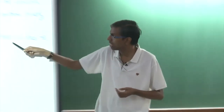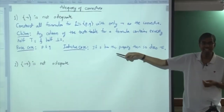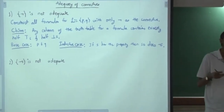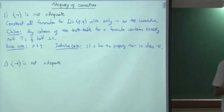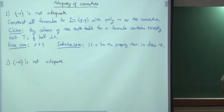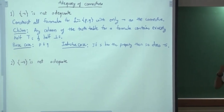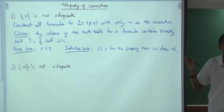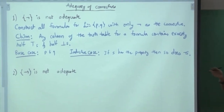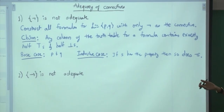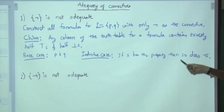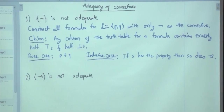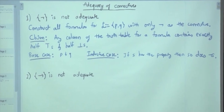Then you can complete the proof that any truth function whose column consists of 3 truths or 3 falses cannot be written using this — or even 4, for that matter. All 4 truths (tautology) or a contradiction (all 4 falses) also cannot be expressed using this.